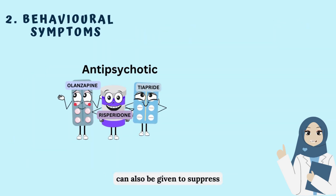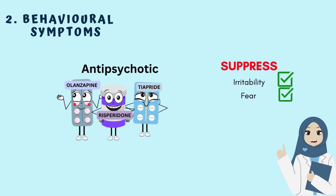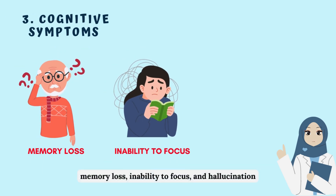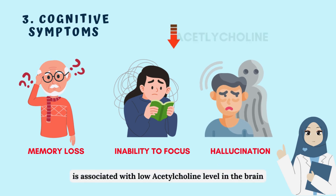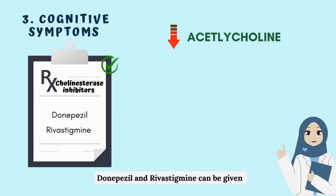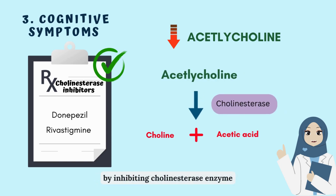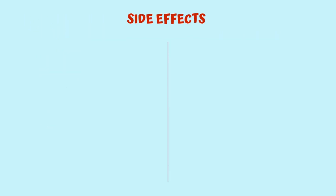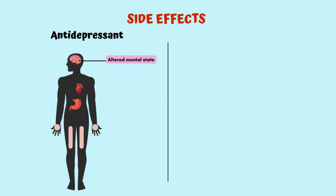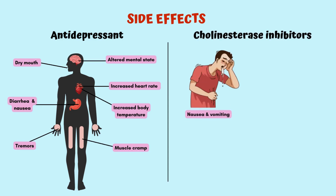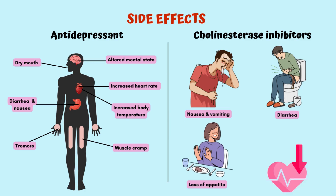Antipsychotics can also be given to suppress irritability, fear and agitation. For cognitive symptoms such as memory loss, inability to focus and hallucination — associated with low acetylcholine levels — cholinesterase inhibitors such as donepezil and rivastigmine can be given. They inhibit acetylcholine breakdown by inhibiting the cholinesterase enzyme, thereby increasing acetylcholine levels. Long-term antidepressant use may cause altered mental state, dry mouth, increased heart rate, increased body temperature, diarrhea, nausea, tremors and muscle cramps. Side effects of cholinesterase inhibitors include nausea, vomiting, diarrhea, loss of appetite and low heart rate.